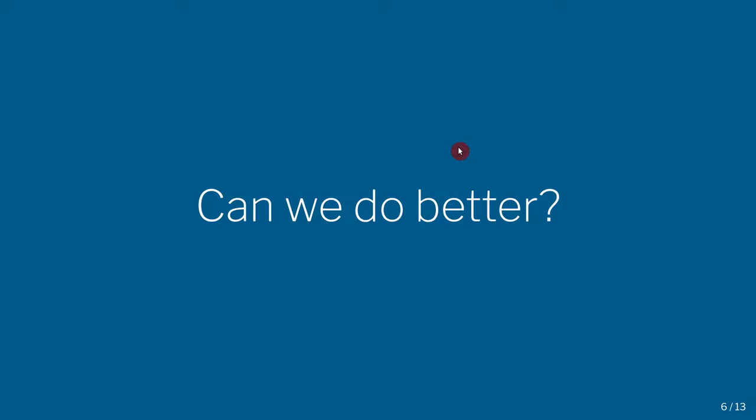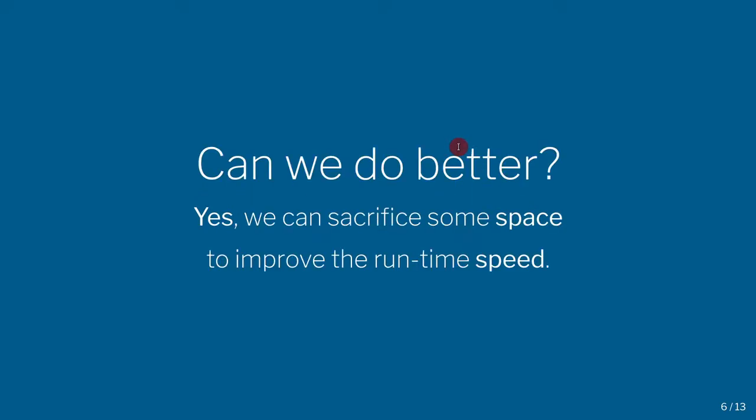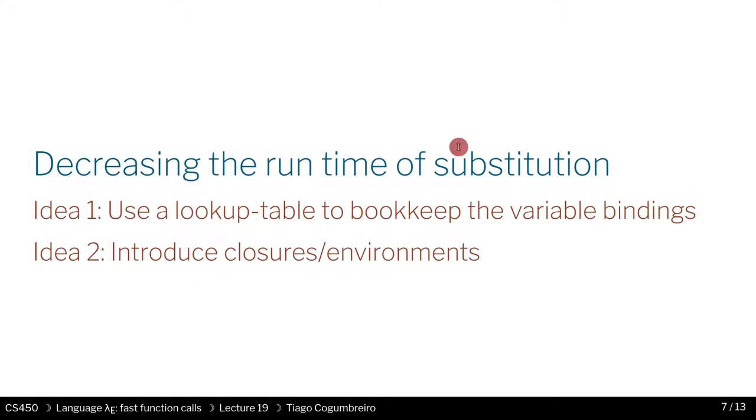Well, we do what we usually do: we trade off a bit of time for memory. Or to put it another way, we're going to cache. We want to store in memory as much as we can to improve performance and reduce time. So increase space, reduce time — the usual tradeoff. One idea is to delay substitution until it's really necessary.